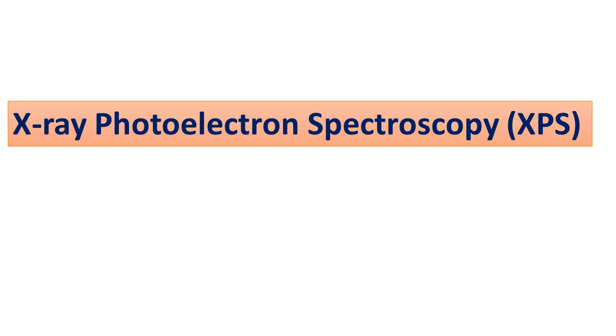One is XPS, that is X-ray photoelectron spectroscopy. Second is Auger electron spectroscopy and third is UPS, ultraviolet photoelectron spectroscopy. Today I will be talking only on XPS, X-ray photoelectron spectroscopy.